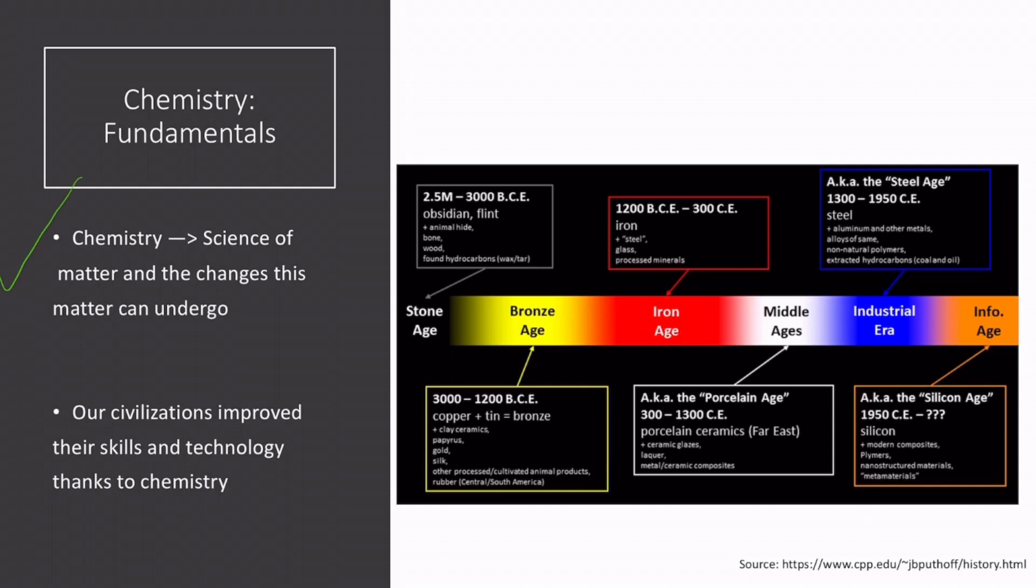Chemistry is the science of matter and the changes this matter can undergo. It comprises everything material and tangible around us. Everything living or dead, vegetable or mineral, things on Earth and in outer space - everything contains chemistry.